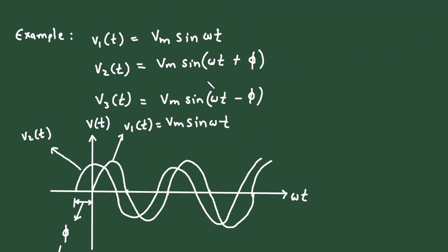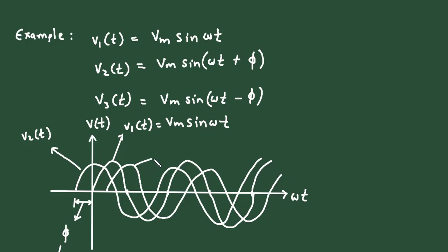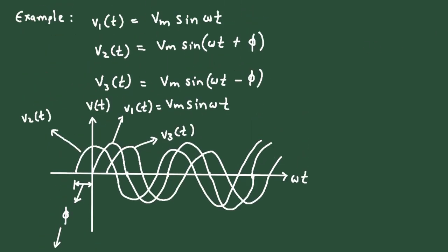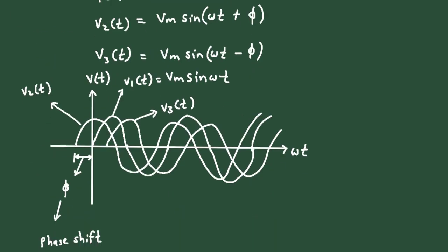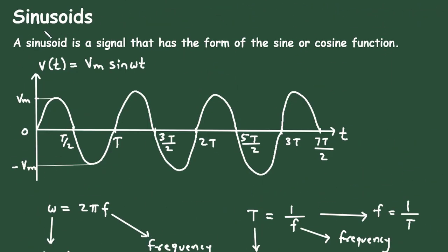Now drawing Vm sin(omega t − φ): the minus φ means the waveform starts later, shifted to the right. This is Vm sin(omega t + φ) leading, this is Vm sin omega t in the middle, and this distance is again φ which is the phase shift for the lagging waveform. So this is all about sinusoids.